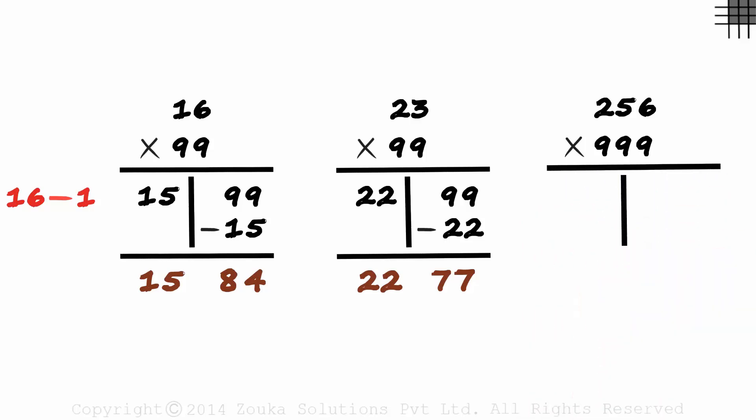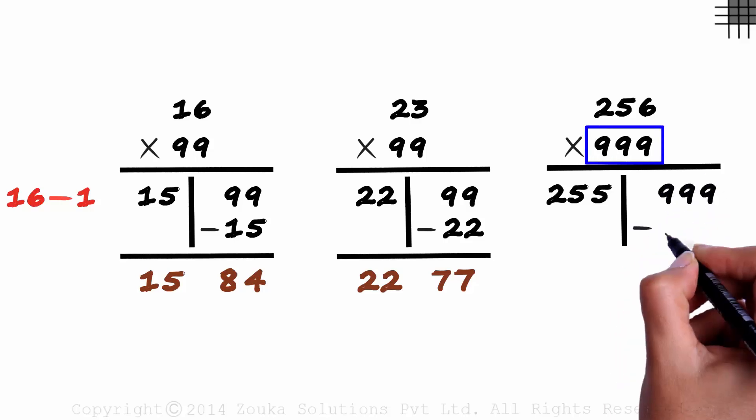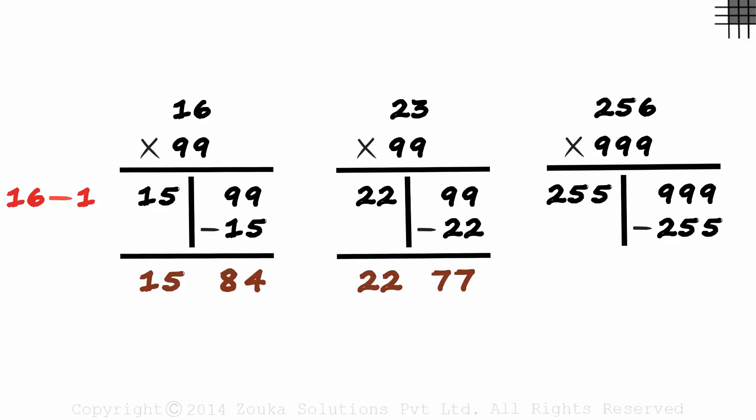We make a partition first. On the left, we have two hundred and fifty-six minus one, which is two hundred and fifty-five. And on the right, we have nine hundred and ninety-nine minus two hundred and fifty-five. Don't make the mistake of subtracting this number from nine hundred and ninety-nine. It's the number we get here that we need to subtract from nine hundred and ninety-nine.